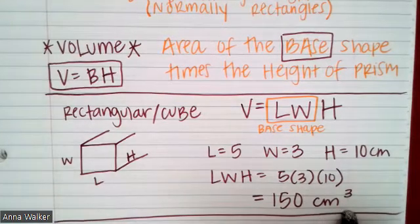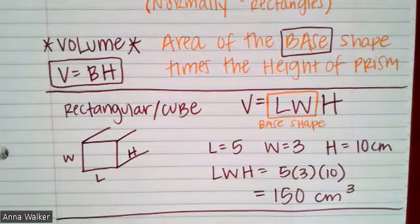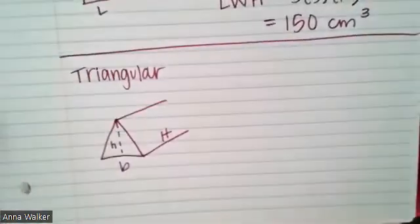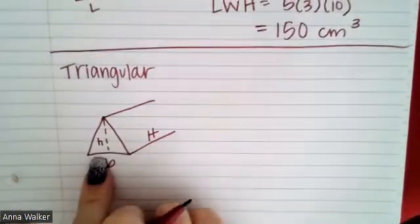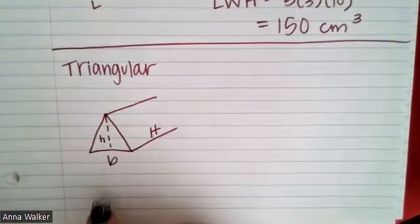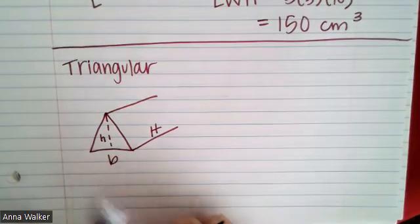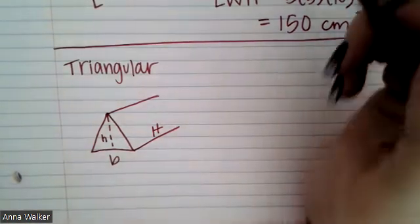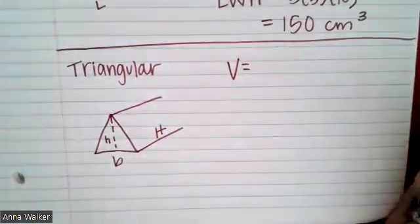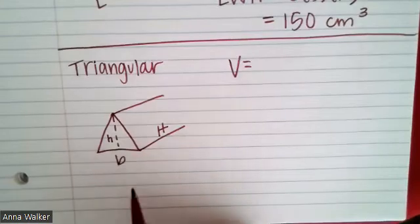That's how we find the volume of a rectangular prism or a cube — hopefully a review from previous math classes. The last shape we're going to cover in this video is a triangular prism. Based on the name, the base shape is a triangle. Triangular prisms are often drawn like a camping tent or like a skyscraper building. The top and bottom faces are triangles, and we need the area of that triangle times the height of the prism.